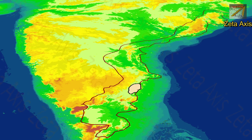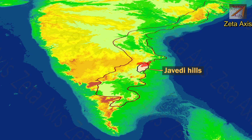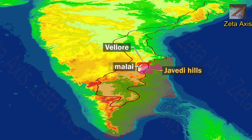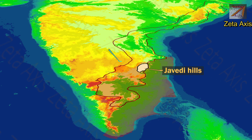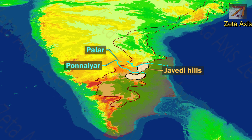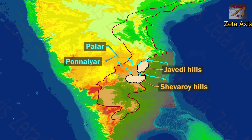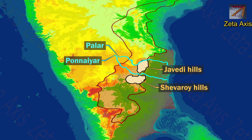The next mountain range is the Jawadi hills, which are an extension of the Eastern Ghats spread across Vellore and Tiruvannamalai districts in Tamil Nadu. The Palar river flows from north of the Jawadi hills. The Ponnai river separates the Jawadi hills from the Shevaroy hills. Dense forest cover is seen on the Jawadi hills.